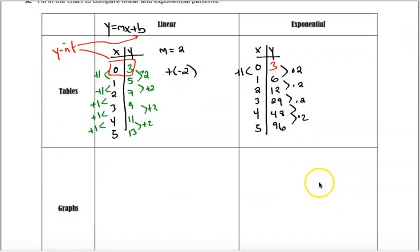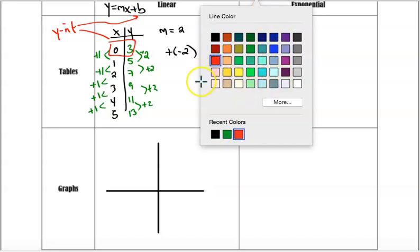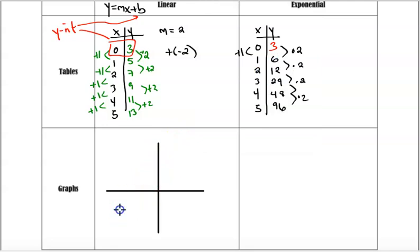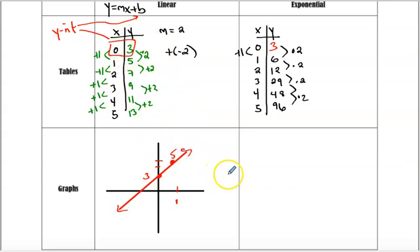We're going to go back to what we did in graphing. If we graph the linear piece, we're thinking about what a linear function looks like. This could look something like a line with a y-intercept of 3 and a slope where you run 1 and rise 2. So when x is 1, y is 5. This could represent that line — it's linear, it's constant, it has a constant rate of change.